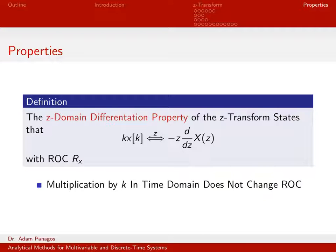So if you already know what the z-transform of x of k is, and you want to know what the z-transform of k times x of k is, all you need to do is do some basic calculus, take the derivative of x of z, and then multiply by a negative z.